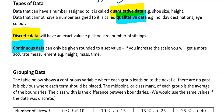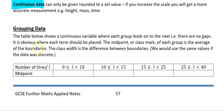Next thing we're going to look at is grouping data. There are various ways that we can group data. This one says the number of leaders l, and we've got all the different boundaries. What this means is we have zero is less than or equal to your number of leaders, which is less than 10. What's important here is that we understand what the boundaries are — you can't just look at one interval to discover what the boundaries are; you've got to also look at the next interval.